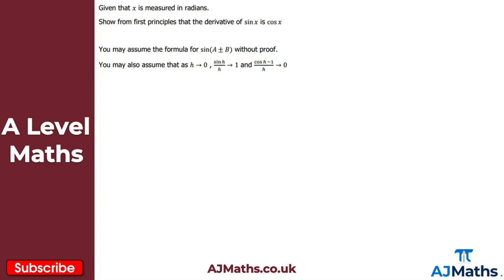To begin with, let's take a look at showing from first principles that the derivative of sin x is cos x. We're told we may assume the formula for sin(a ± b) without proof, so we can just use the formula. We're also given the behavior as h tends to zero: sin h over h tends to one, and cos h minus one over h tends to zero — you'll see why we need those in a moment.